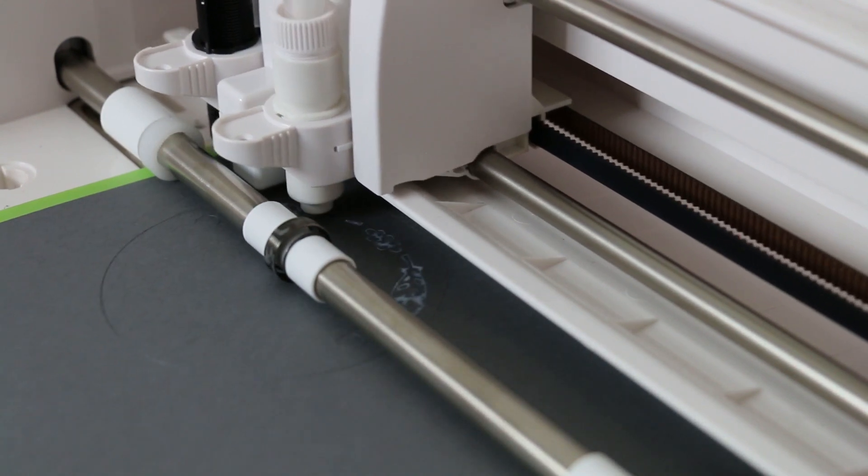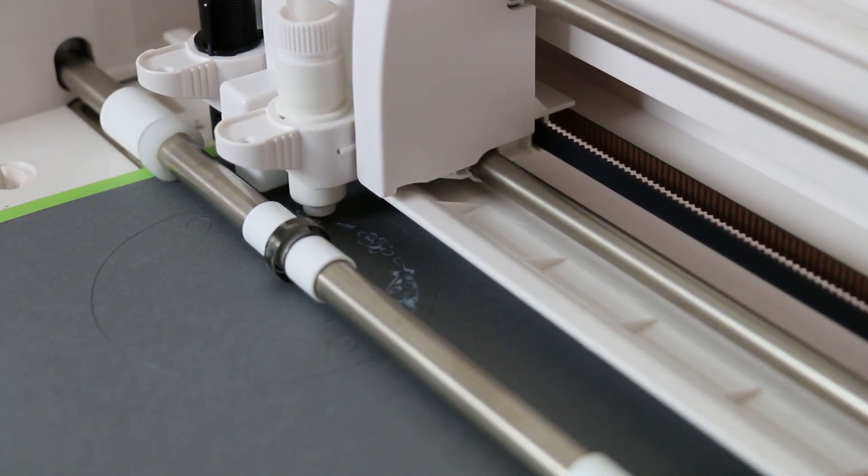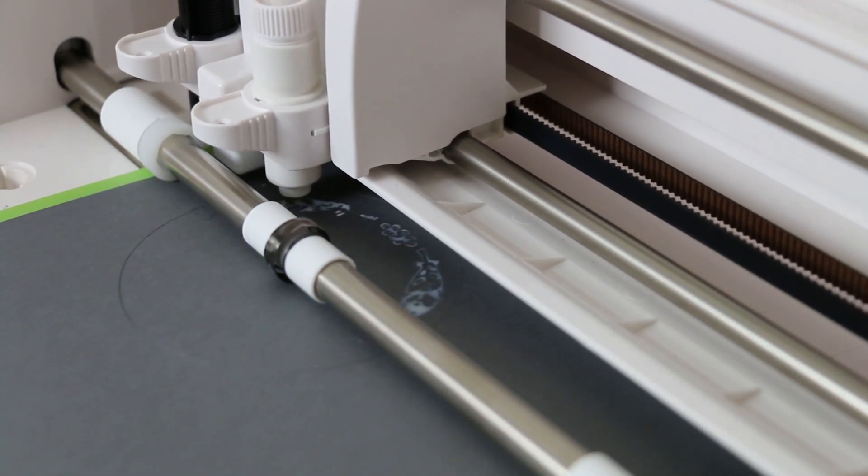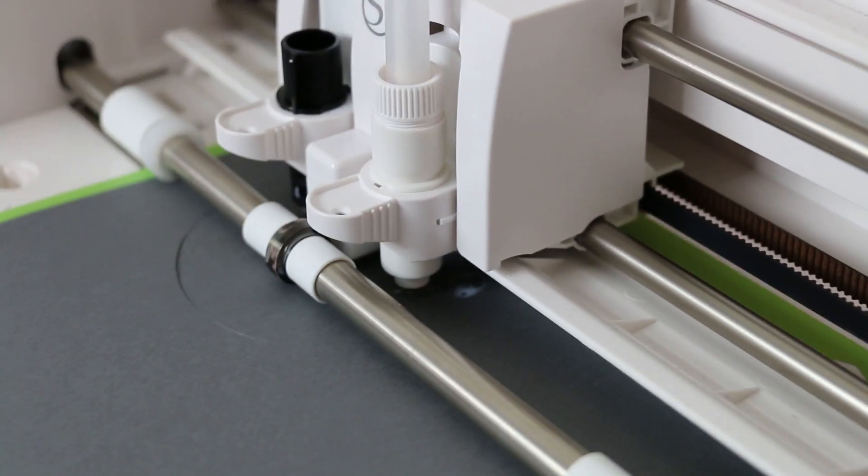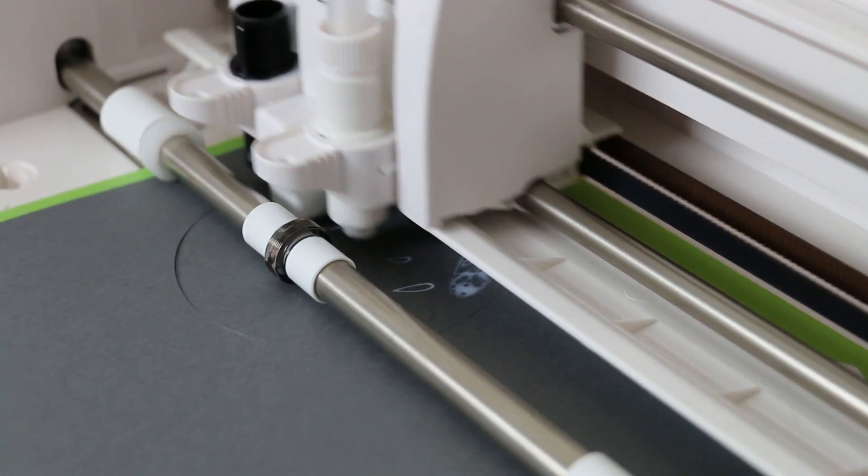Hey guys, today I'm going to teach you how to sketch and cut at the same time with a Silhouette. To do this you're going to need either a Silhouette Cameo 3 which has two tool holders or a Silhouette Curio.